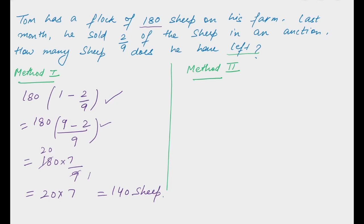In method 2, again, you can take the total number of sheep, 180, take away 180 times 2/9, the sheep he has sold. So, again, 9 goes into 9 once, 9 times 20 is 180, and 180 take away 20 times 2 is 40, which again equals 140 sheep.